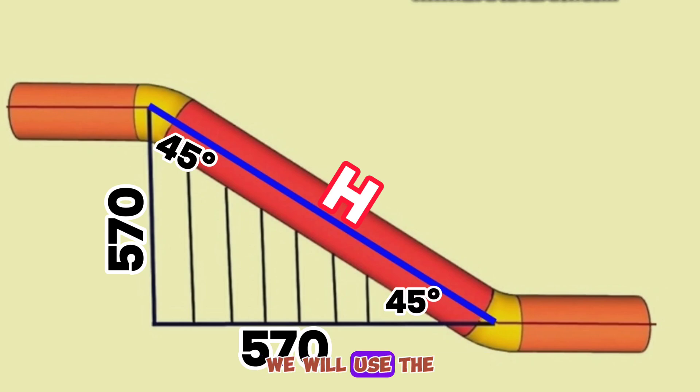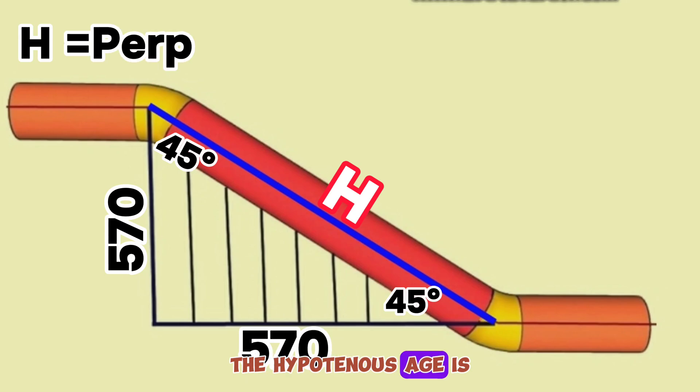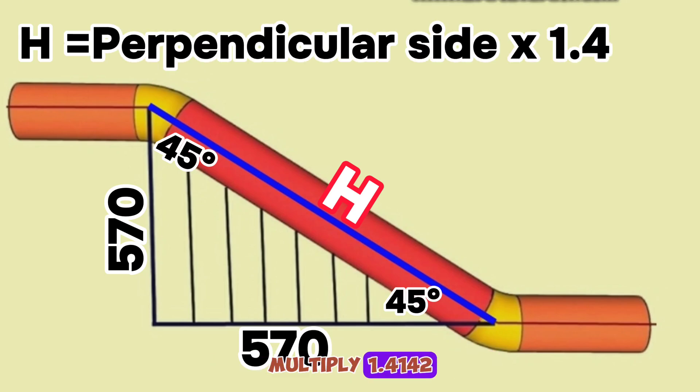We will use the Pythagorean theorem formula to calculate the hypotenuse of this right triangle. According to the Pythagorean theorem, the hypotenuse H equals the perpendicular side multiplied by 1.4142.